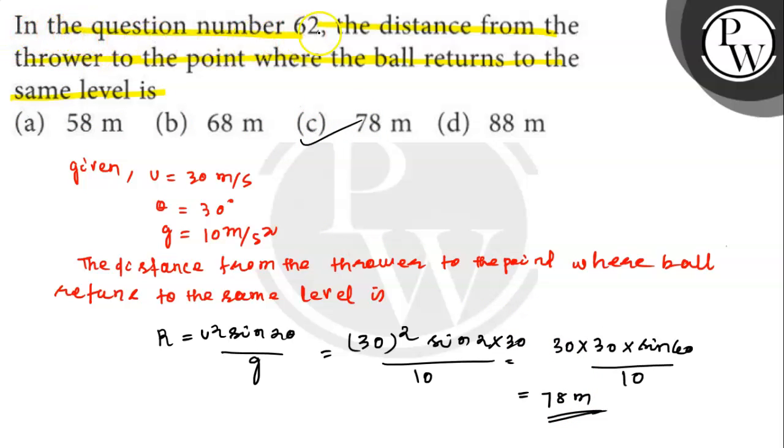In question number 62, the distance from the thrower to the point where the ball returns to the same level, the answer is option C, 78. Hope you understood it well. Thank you.